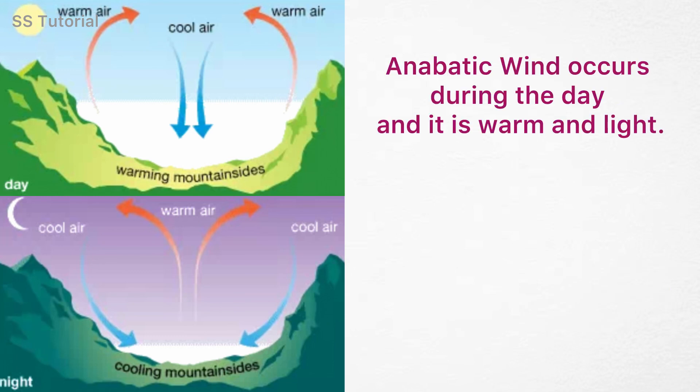Anabatic wind occurs during the day and it is warm and light. When the sun heats the air at the valley, which results in warm and light air in the valley, this warm and light air rises upward as anabatic winds.